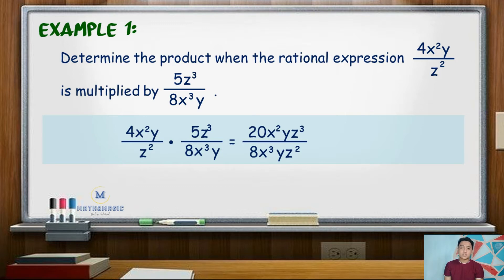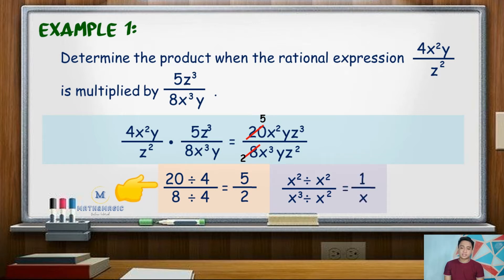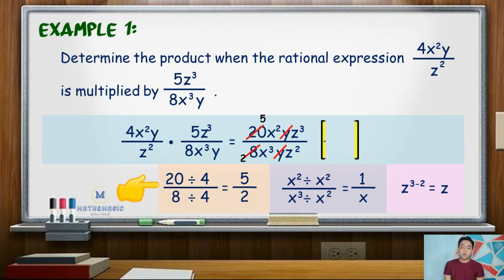Now we need to simplify the rational expression. 20 and 8 have a common factor of 4, so simplifying gives 5 over 2. For variable x, x squared divided by x cubed — applying the quotient of powers rule — gives 1 over x. Variable y cancels out. For variable z, z cubed over z squared is simply z. Hence, the product is 5z over 2x.